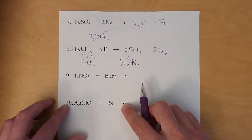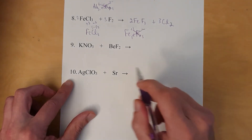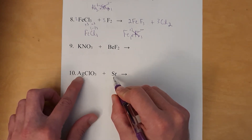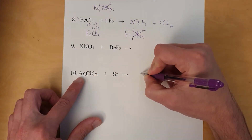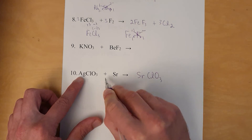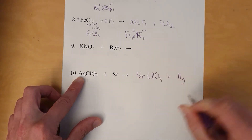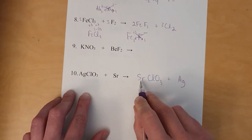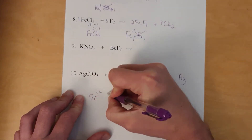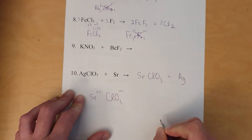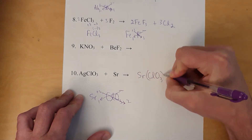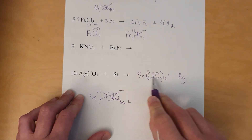Let's do the last single displacement reaction. Like replaces like — strontium is a metal with a positive charge, and so is silver. So strontium will pair with the chlorate and silver will be a pure element by itself. We've switched the parts. Now fix the formulas: strontium is a +2, chlorate is a −1, so you're going to have one strontium and two chlorates in the formula.